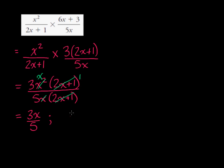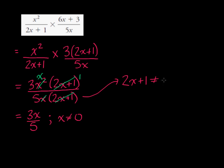Now we do have to still make sure to state restrictions anytime we're simplifying rational expressions. From the x here, we've got a restriction that x cannot equal 0. And from this factor here, we've got 2x plus 1 cannot equal 0, which means that x cannot equal negative 1 half. We want to add that to our restrictions as well.